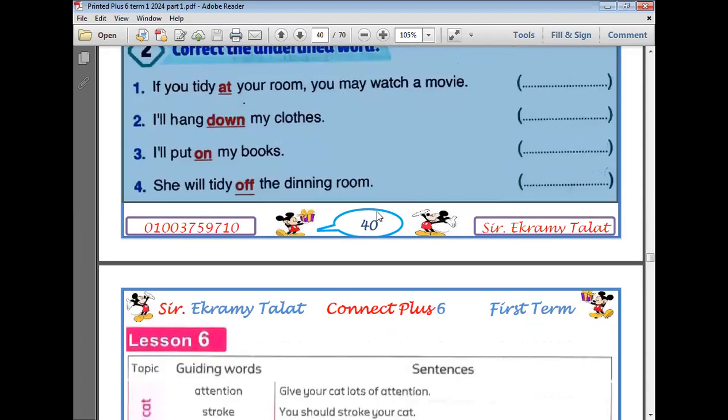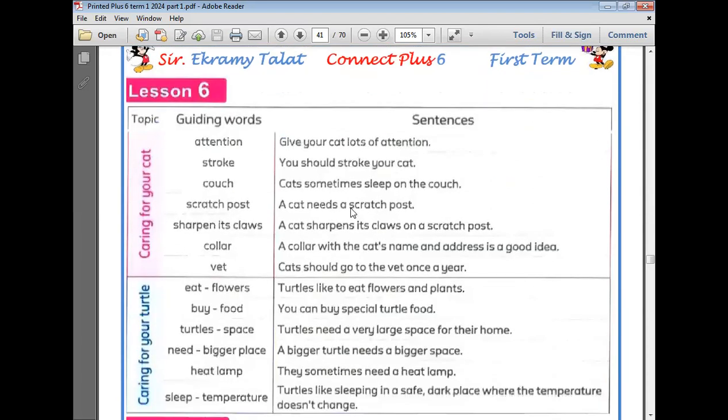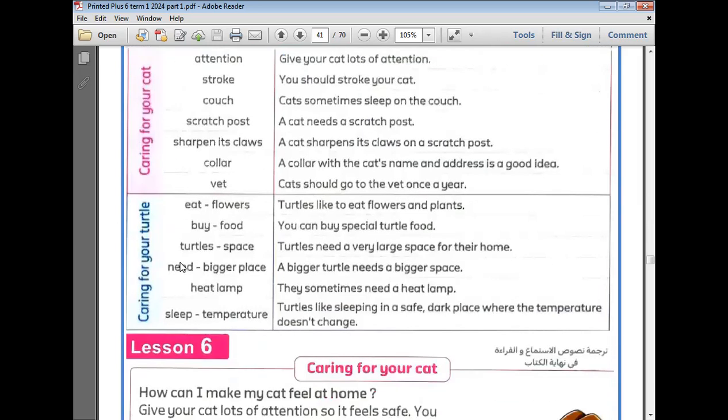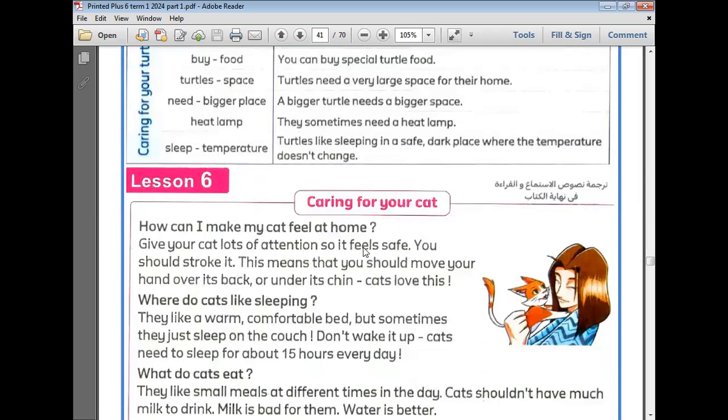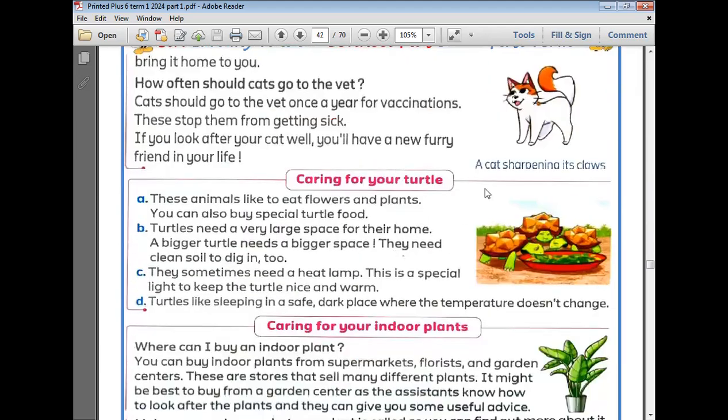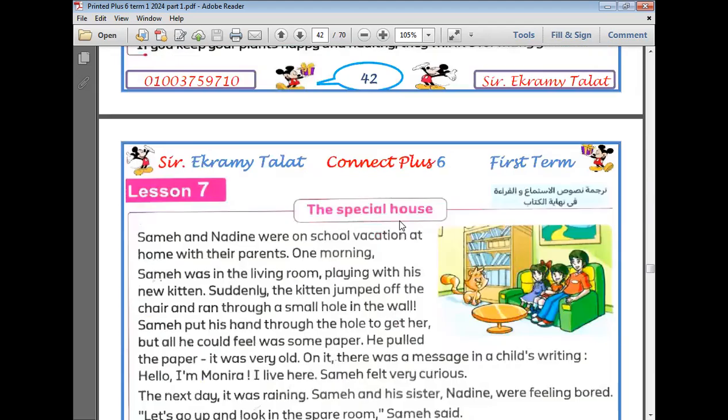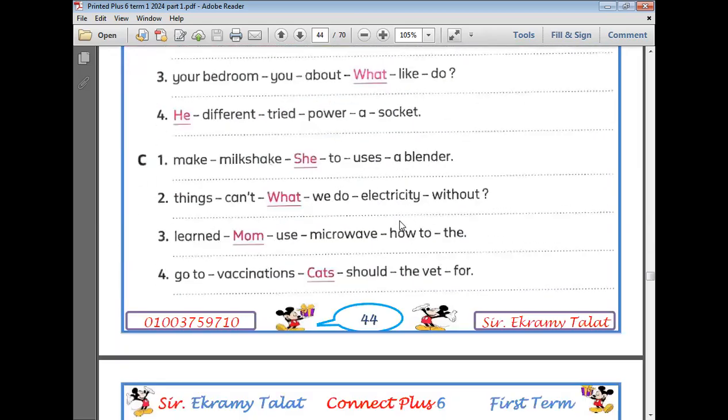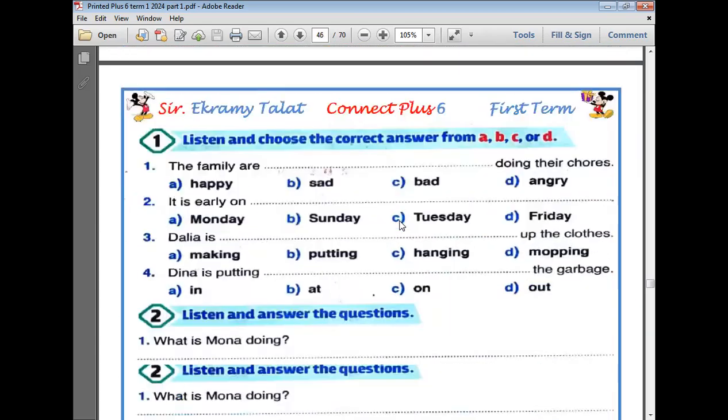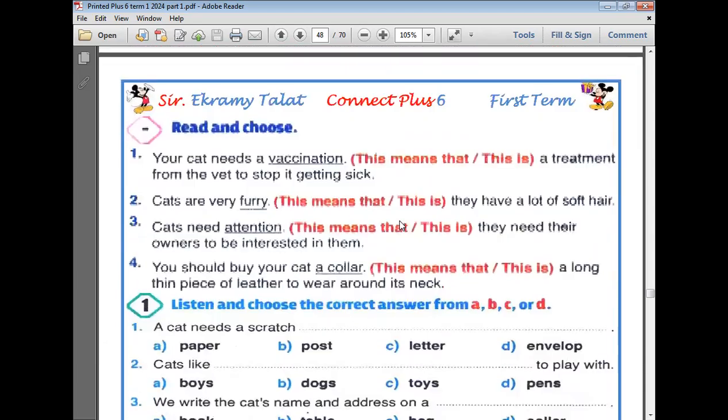This is for lesson five. As for lesson six and seven, it's about caring for your cat. Connect Plus Unit 2, lessons six and seven. This is the last one, the unit.